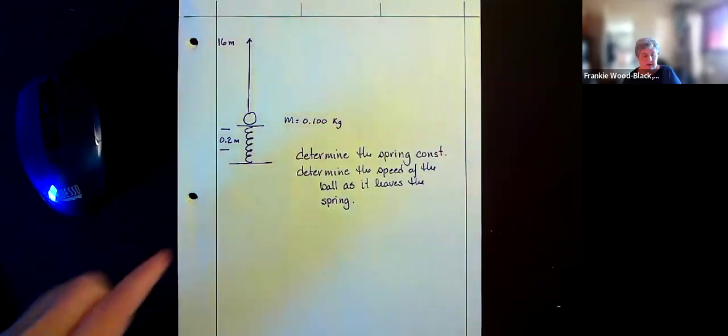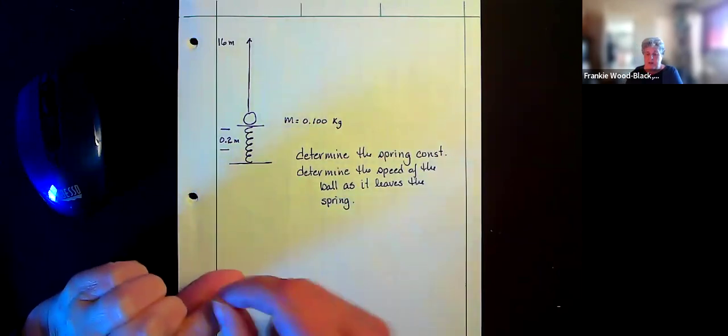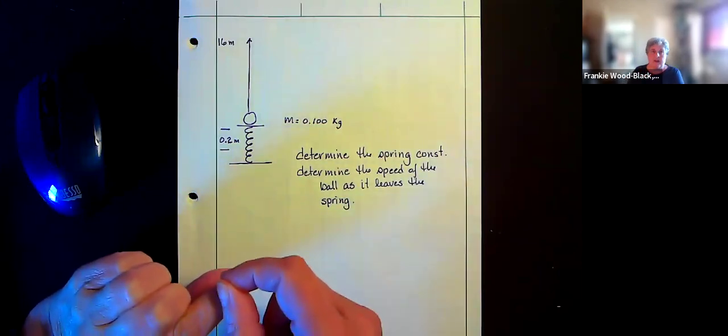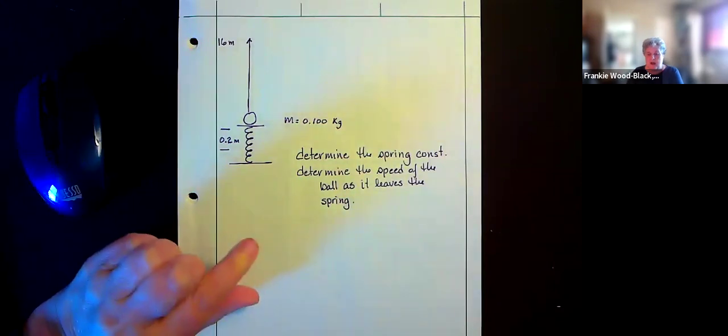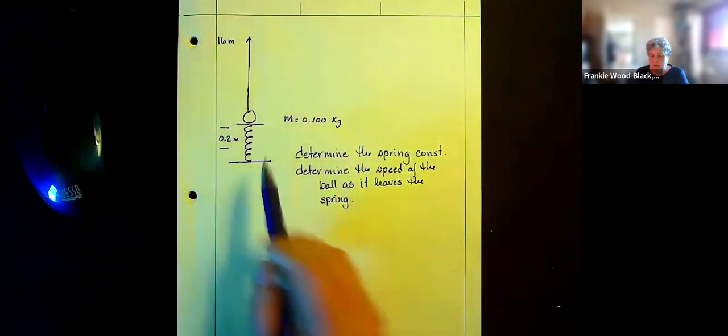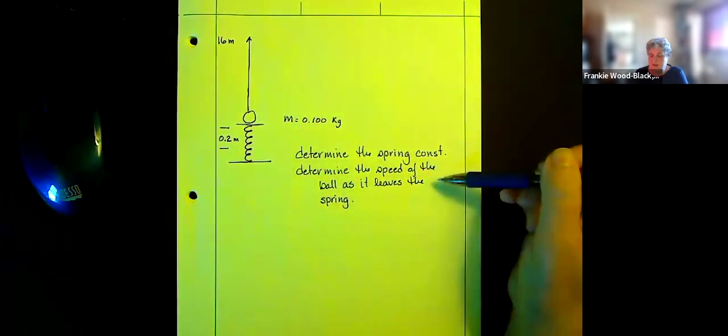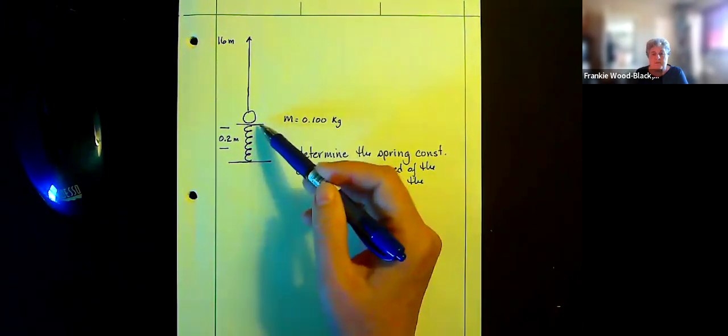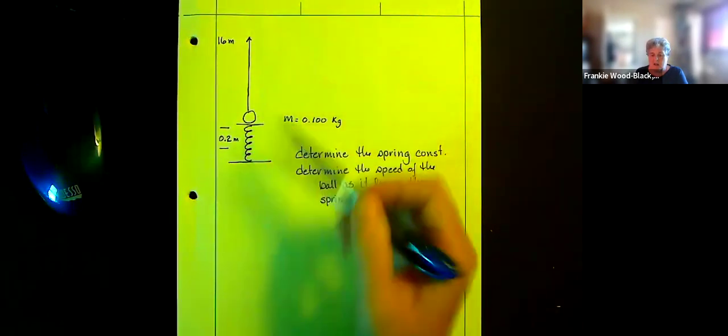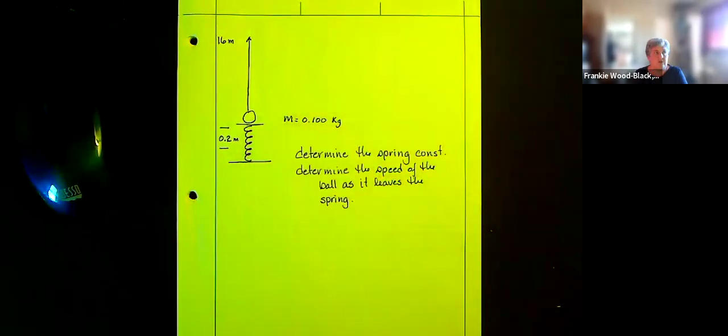So we have an object on a spring, and I'm going to compress my spring, and I'm going to release it, and I'm going to allow the energy to go up. And we want to determine two things. We want to determine the spring constant of the spring, and we want to determine the velocity of the ball as our spring goes to its zero stretch.